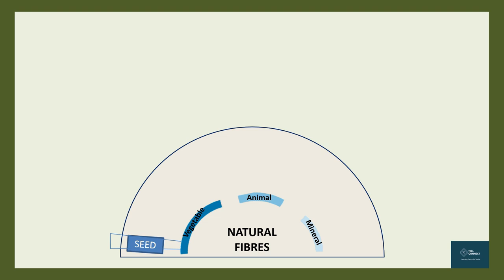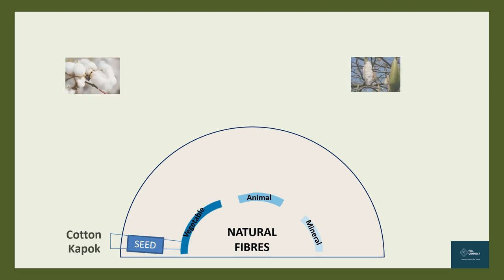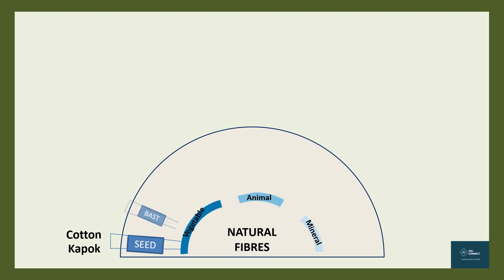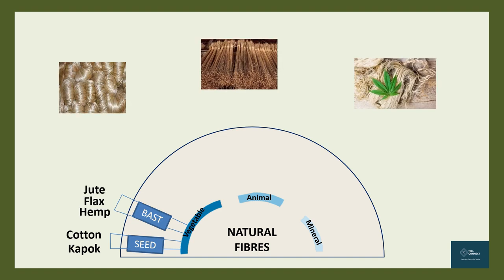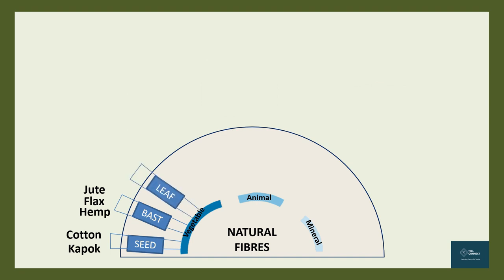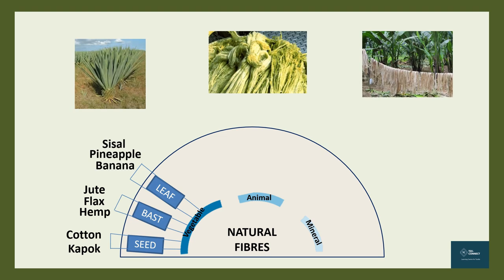The major seed fibers most widely used all over the world since thousands of years are cotton and coir. The next category is bast or stem fibers, which are found in the inner bark of the plant stem — the major ones being jute, flax, and hemp. Fibers that run lengthwise through the leaves giving them additional strength are the leaf fibers; sisal, pineapple, and banana are the major leaf fibers.